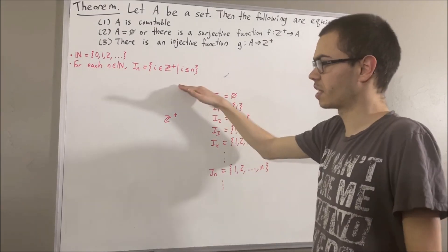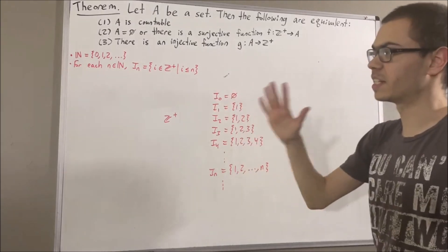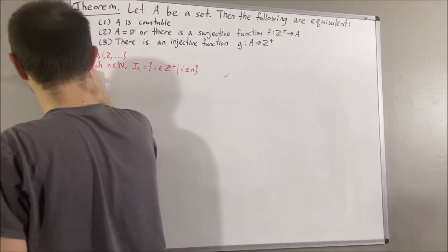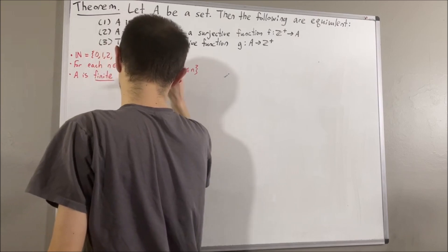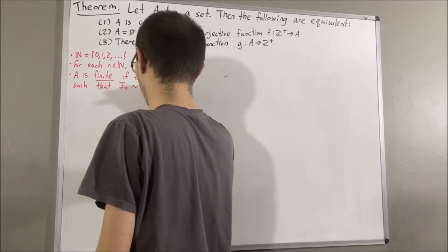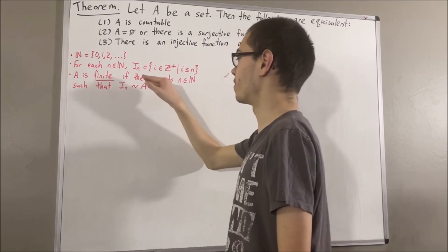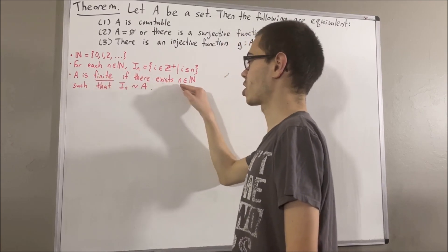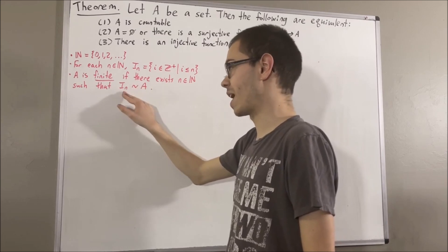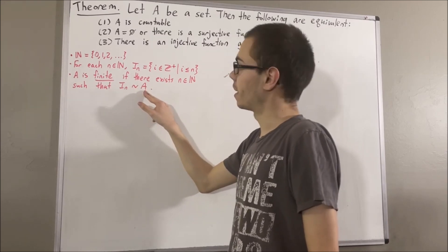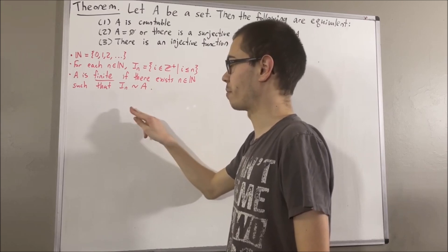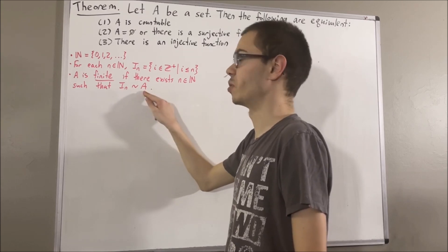Using this, our definition of a finite set is as follows. We say A is finite if there exists a natural number n such that there exists a bijection from Iₙ to A. This is the notation we'll use to say that there exists a bijection from this set to this set.